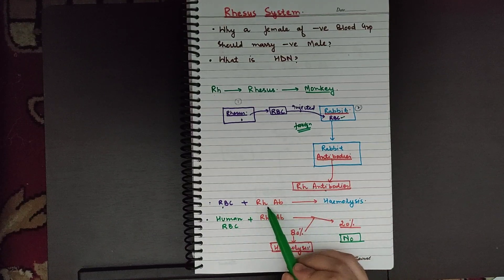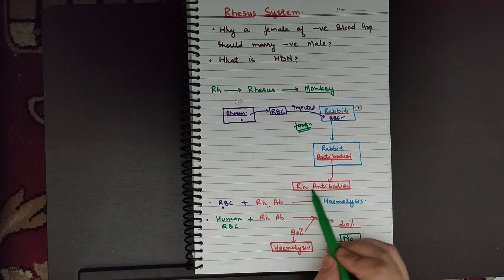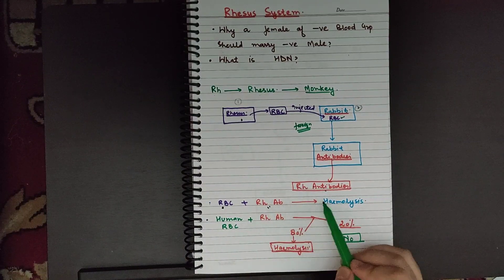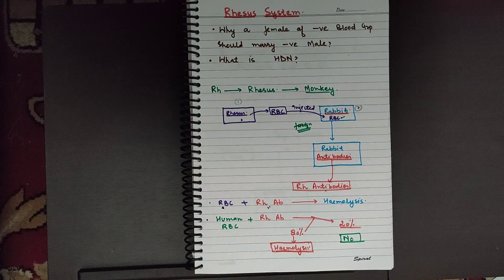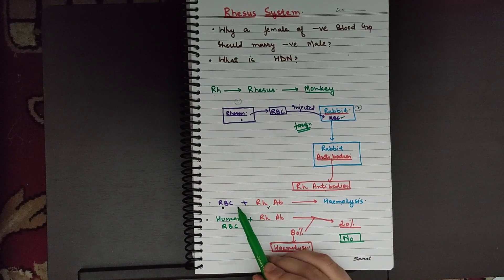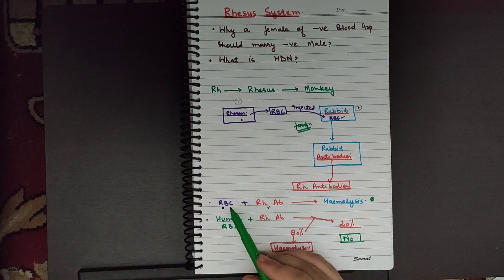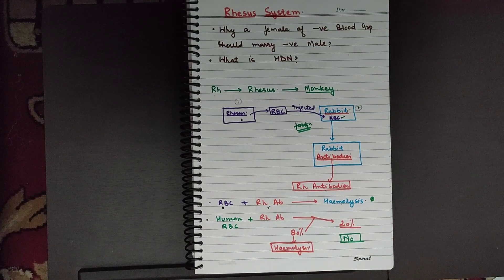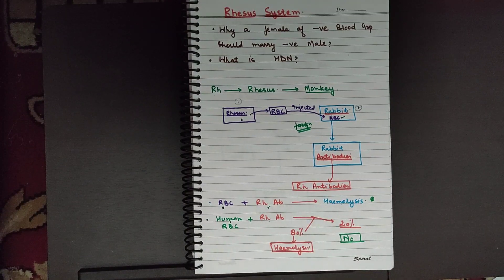The blood of the Rhesus monkey mixed with the RH antibodies — what is going to happen? These antibodies will destroy the RBCs, causing hemolysis. This is very common because the RH antibodies are directed against these RBCs. Then I took human RBCs and mixed them with the RH antibodies — this is very interesting.